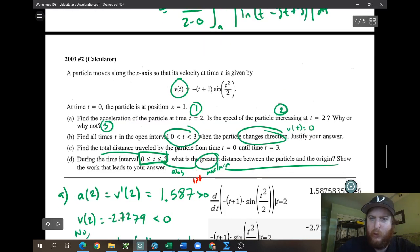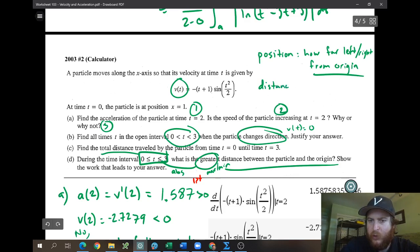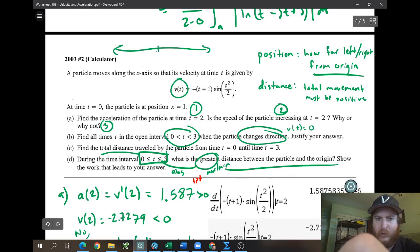But, you know, when we think about the word position, position means how far, basically to the left, or to the right from the origin. Right? And when we think of the word distance, we think of kind of like the total movement. This is neither one of those. It's kind of weird. So distance, you know, must be positive, right? But if I say the distance between the particle and the origin, what that means is, you know, if here's our origin at zero,